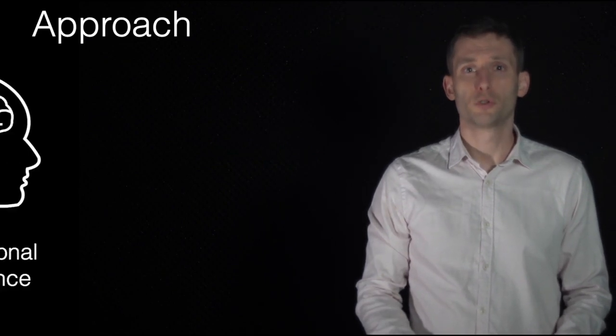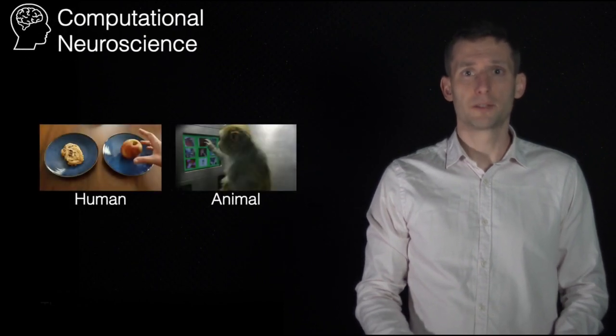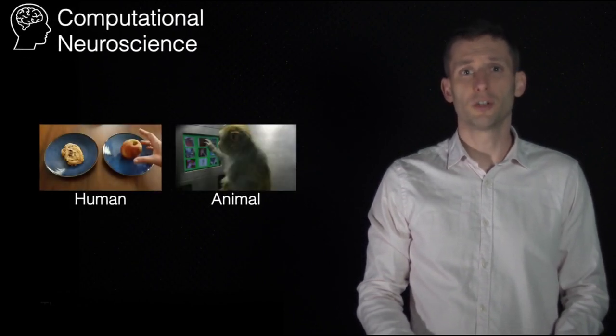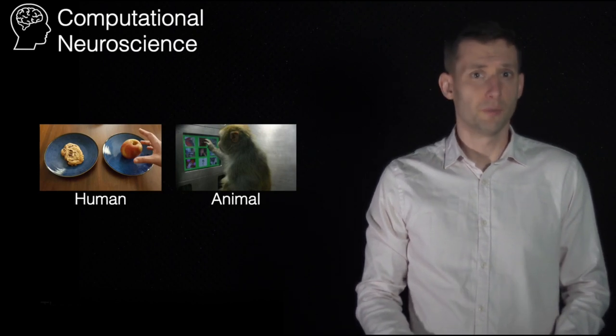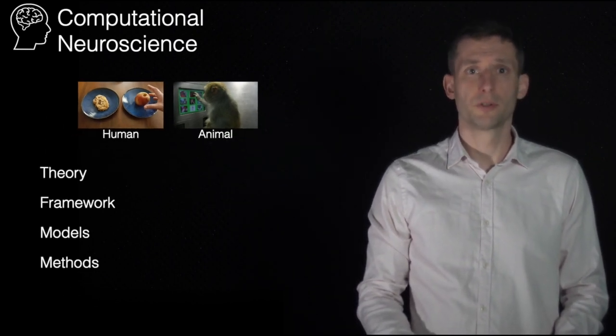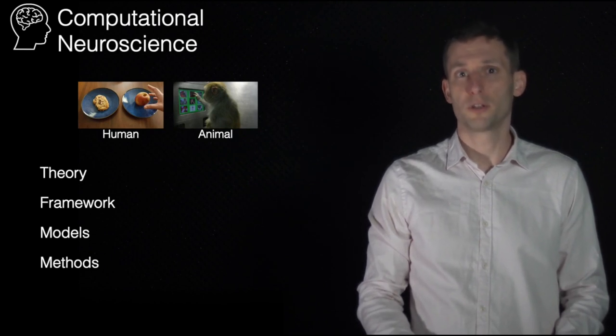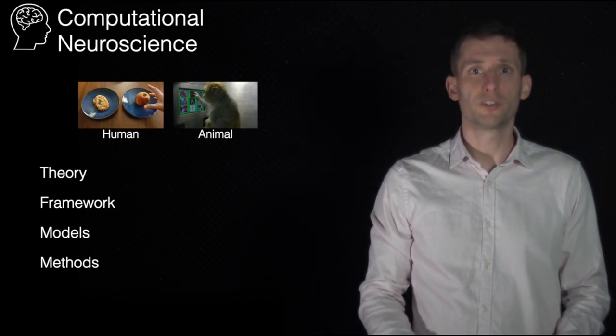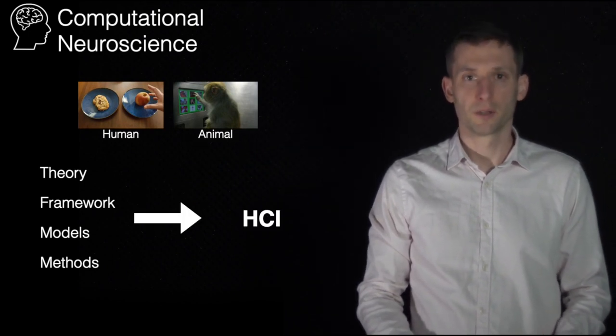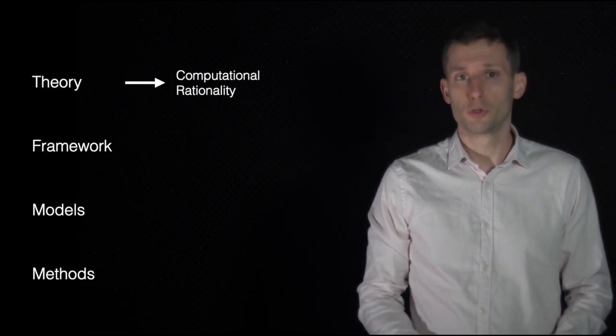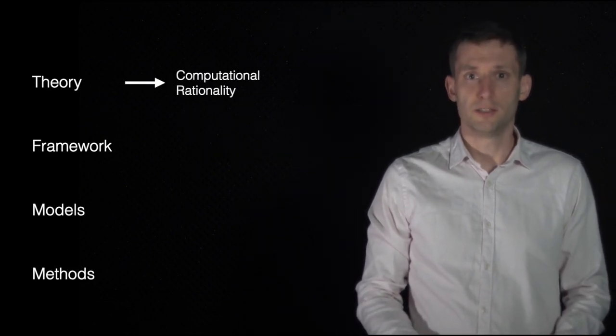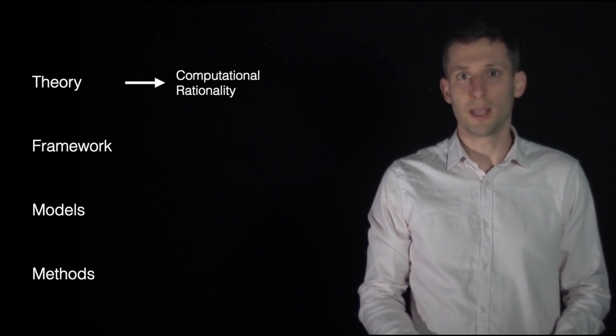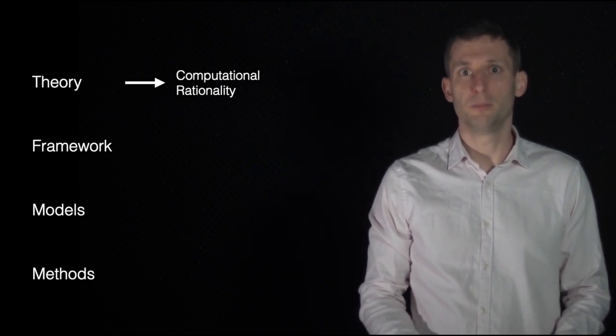To answer this research question, our approach relies on computational neuroscience. Computational neuroscience studies how humans and animals make decisions and how these decisions evolve over time. They propose theories, frameworks, models, and methods to study how humans and animals learn to make decisions. We argue that these contributions in computational neuroscience can benefit HCI. Regarding theory, we build on computational rationality, the idea that humans choose actions maximizing long-term expected rewards given their limited cognitive resources.